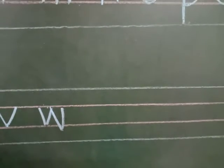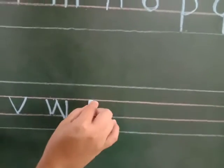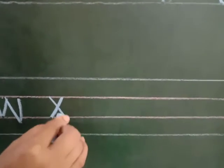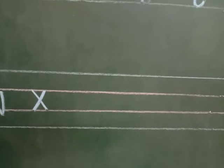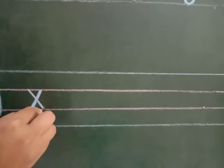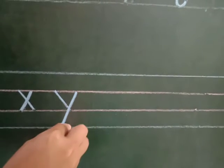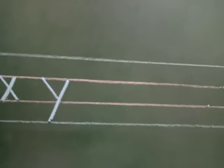Which letter comes next? X — slanting line, slanting line. Small x. That day also I told: this is a sign of a cross as well. So small x is like a cross. Small y: slanting line, slanting line. Small y.